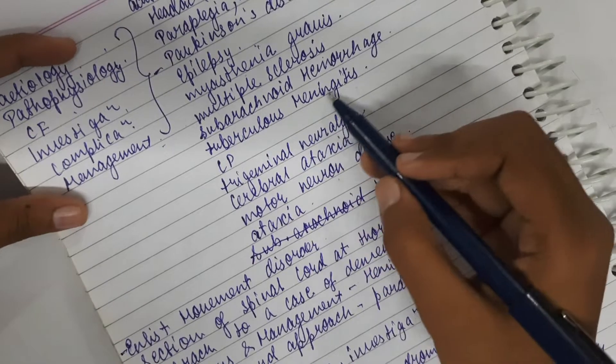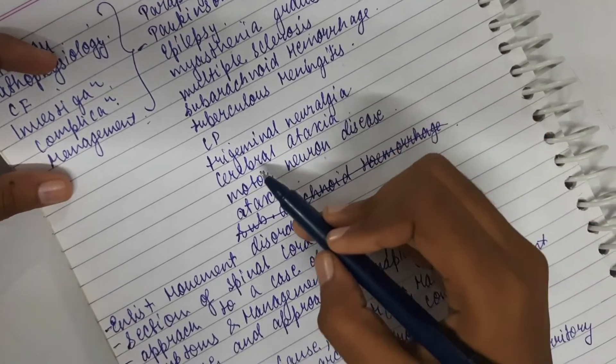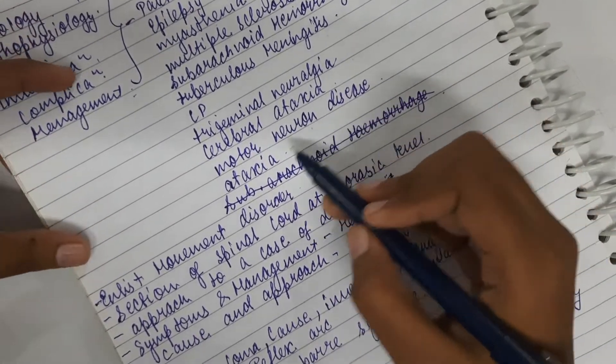Subarachnoid hemorrhage, tubercular meningitis, cerebral palsy, trigeminal neuralgia, cerebellar ataxia, motor neuron disease, ataxia.